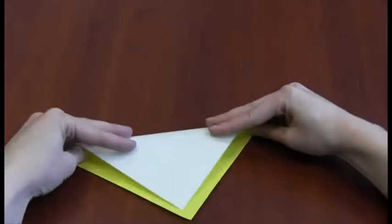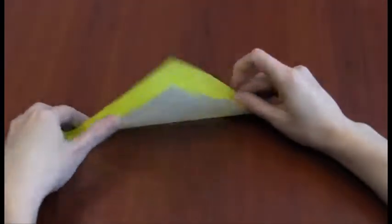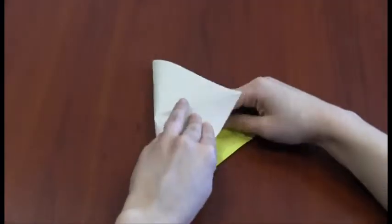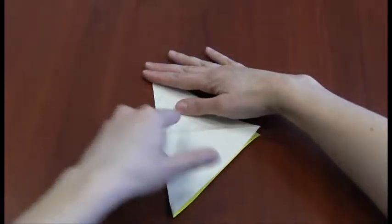To begin, place the paper on a flat surface color side up in a diamond shape. Fold it horizontally toward you, unfold, then fold it vertically toward you. Unfold again.